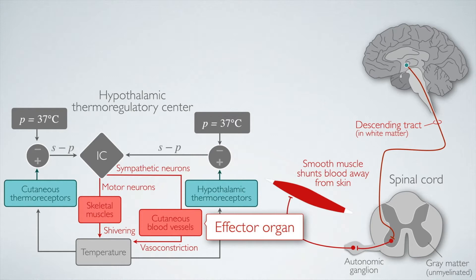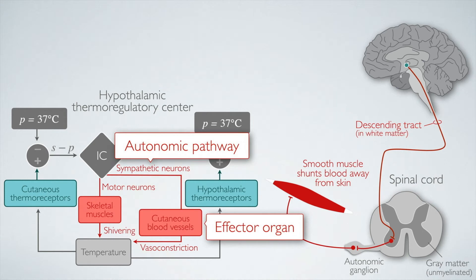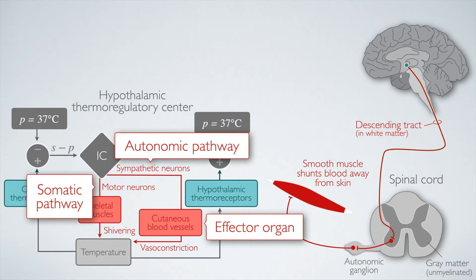Skeletal muscles and cutaneous blood vessels are both examples of effector organs — organs along the efferent pathway that are acted upon through excitation through neurons. Skeletal muscles have conscious control; you're generally using them to move around. Shivering is not so much a conscious decision, but you're aware of your skeletal muscles vibrating. In contrast, the sympathetic neuron pathway causes vasoconstriction of blood vessels to the skin — something you're not generally aware of — which shunts blood towards the interior of your body. Sympathetic neurons are our first example of an autonomic pathway. We can contrast the autonomic pathway, which we do not have conscious control over, against the motor neurons, which do offer conscious control — characteristic of the somatic pathway.